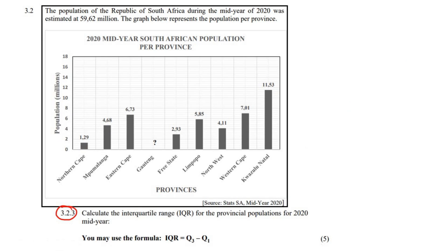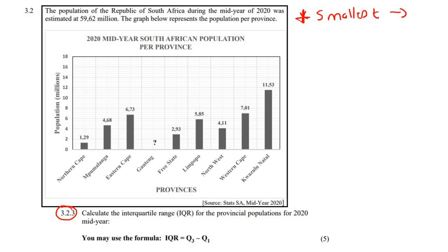This question says: calculate the interquartile range for the provincial populations. You may use the formula Q3 minus Q1. This is five marks. The reason it's worth that much is that when you are doing median, interquartile range, and all of those things, the numbers have to be written from smallest to largest. That's going to be step one.